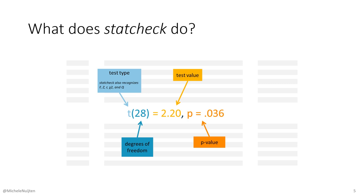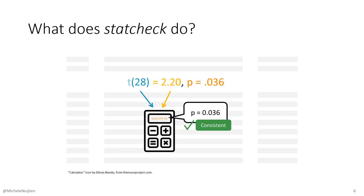StatCheck can recognize t-tests, f-tests, z-tests, correlations, chi-square tests, and — especially relevant for meta-analysis — q-tests for heterogeneity. It takes these ingredients, the degrees of freedom and the test value, and uses them to recalculate the p-value. In this case, if I feed it the degrees of freedom (28) and the test value (2.20), it recalculates a p-value consistent with the one reported in the text — in both cases, the p-value is 0.036. That means StatCheck will label this result as internally consistent; in other words, these numbers belong together.